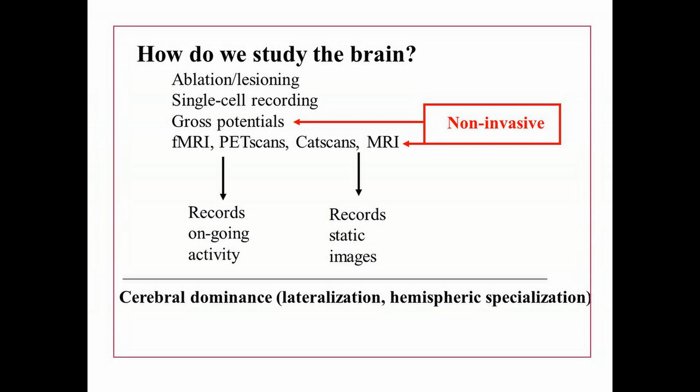Researchers also use fMRI or functional magnetic resonance imaging, PET scans, CAT scans, and MRIs. I'm sure you've heard of at least some of these techniques for studying the activity of the brain.